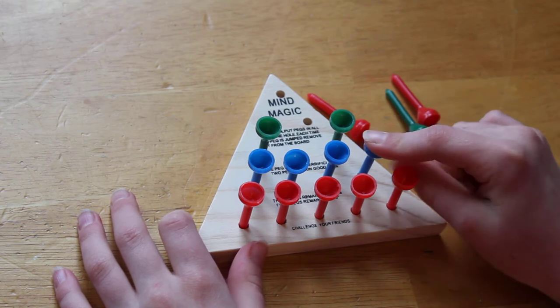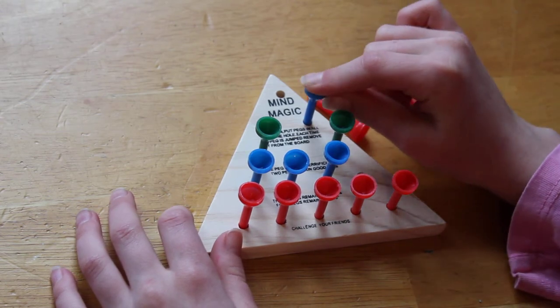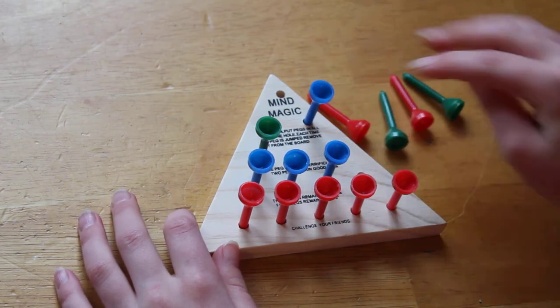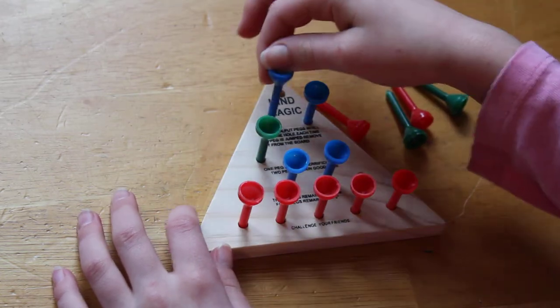Then you take this blue piece over this green piece, and then you take the other blue piece over the other green piece.